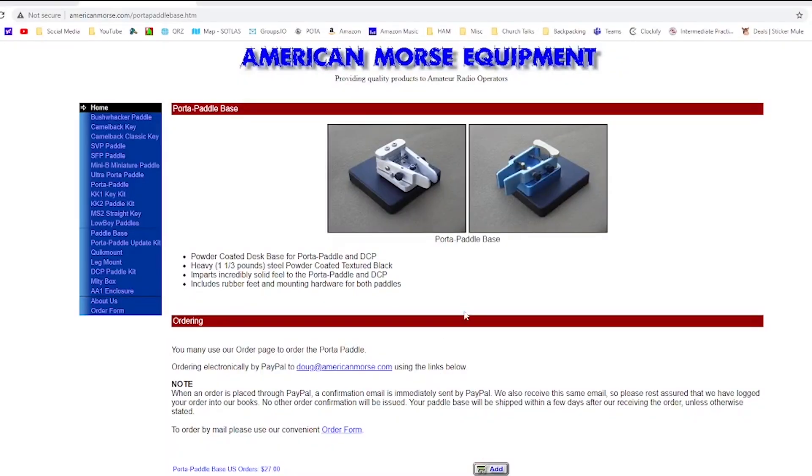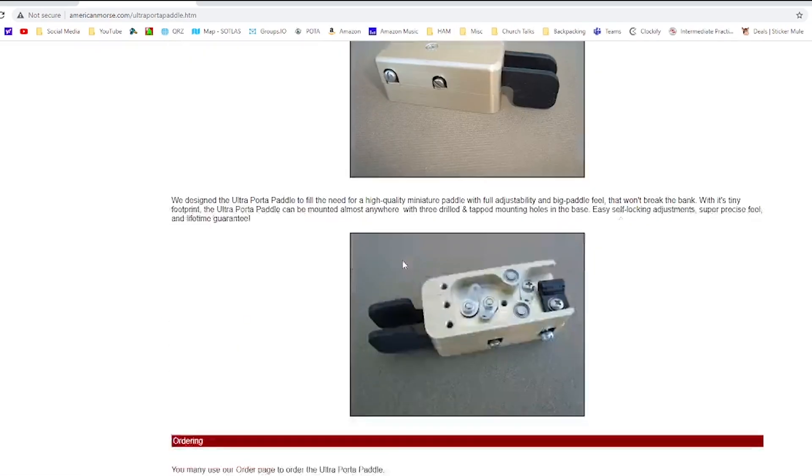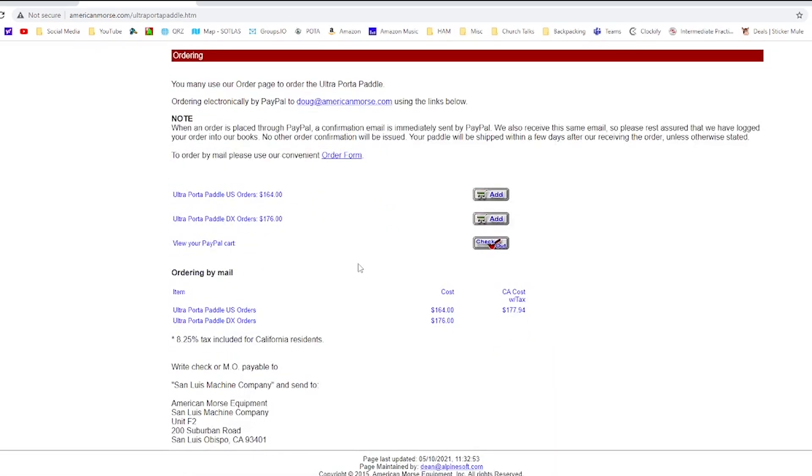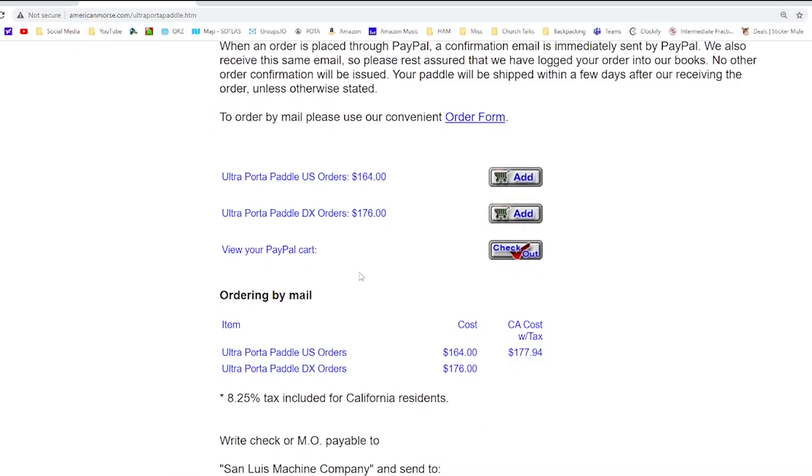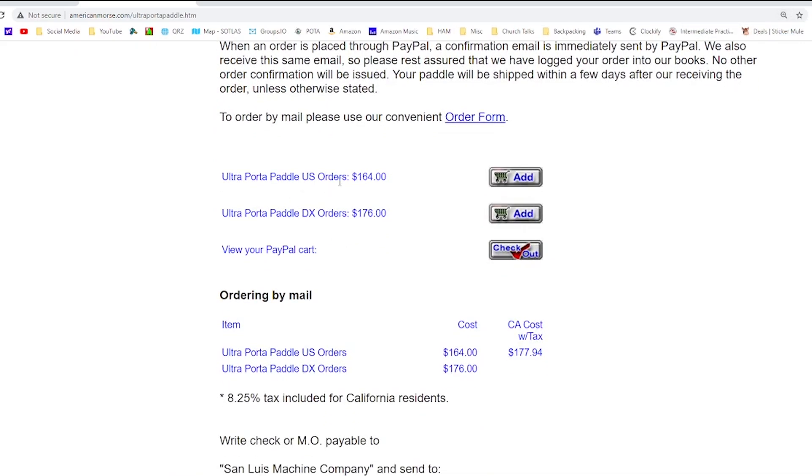All right, so the purchasing options, we have to go to the Ultra Porta Paddle and then bring that up. Let me zoom in here a little bit on that. So the Ultra Porta Paddle comes in at $164 and that includes actually the shipping and it includes the tax. So you get both of those included, that $164, that's actually the exact amount I paid when I bought it several months ago.